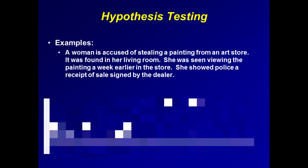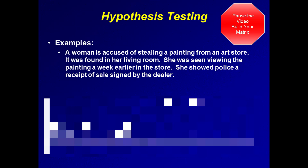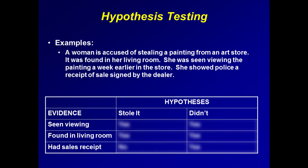Review the scenario on the slide. Then, on a sheet of paper, construct a matrix and indicate in the cells whether, for each item of evidence, the woman either stole the painting or did not. The matrix should look something like this. Now indicate in the cells whether, for each item of evidence, the woman either stole the painting or did not.